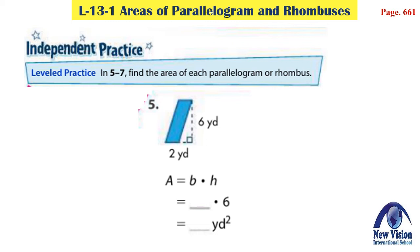In questions 5 through 7, find the area of each parallelogram or rhombus. For question 5: the parallelogram has a base of 2 yards and a height of 6 yards. Area = B × H = 2 × 6 = 12 square yards.